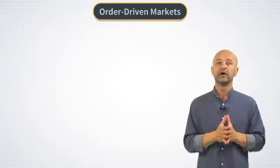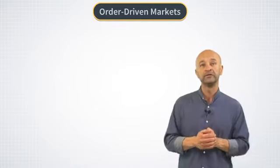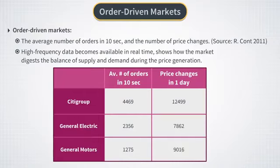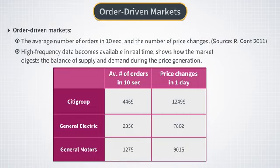The first thing to emphasize about electronic trading with the limit order book is that the amount of data available increases dramatically. A table taken from the cited paper shows data for three stocks: Citigroup, General Electric, and General Motors. It shows that the average number of orders for each of these highly liquid stocks is measured in thousands within a 10-second interval, and price changes within one day are in the tens of thousands. Note that this table refers to almost 10-year-old data, so today these numbers are even higher.